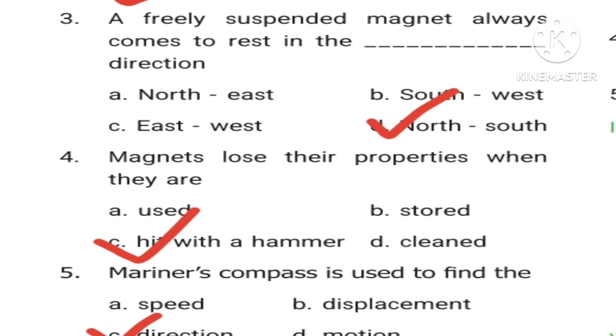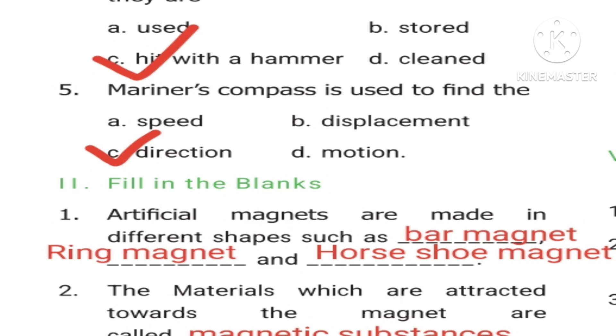Fifth question: Mariner's compass is used to find the dash - First option: speed, B: displacement, C: direction, D: motion. Answer is C, direction. Roman letter 2, fill in the blanks. First question: Artificial magnets are made in different shapes such as dash, dash, and dash. Bar magnet, ring magnet, and horseshoe magnet.